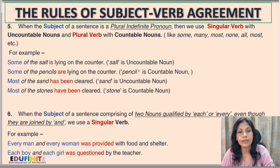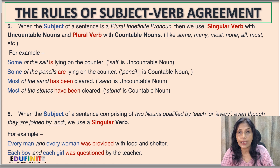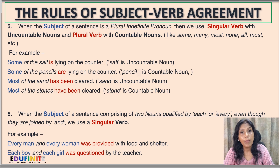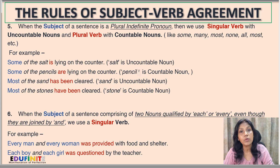Continuing Rule 5: 'Most of the sand has been cleared' — sand is uncountable, so we use the singular verb 'has'. But: 'Most of the stones have been cleared' — stones is a countable noun, so we use the plural verb 'have'.